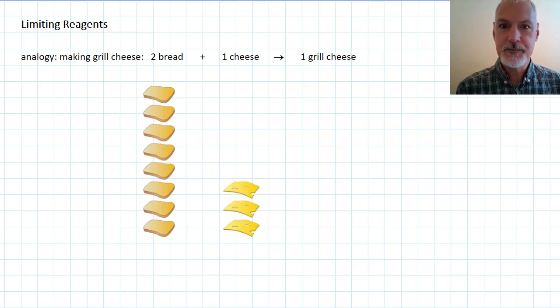Today's lesson is on limiting reagents, and to start off with I want to use a bit of an analogy. Suppose you're manufacturing grilled cheese sandwiches and at your disposal you have eight slices of bread and three slices of cheese, and the question is how many grilled cheese could you make?